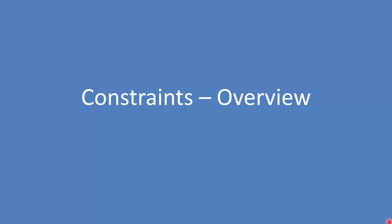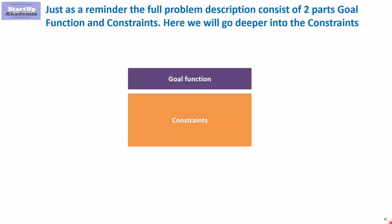Let's discuss in more detail the constraints. As a reminder, a problem described in the language of linear programming consists of two elements: goal function and constraints. When it comes to constraints, we can have plenty of equations that limit our choices and help us pick the optimal solution given the goal function.